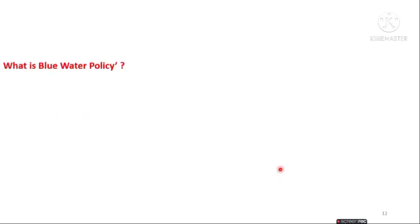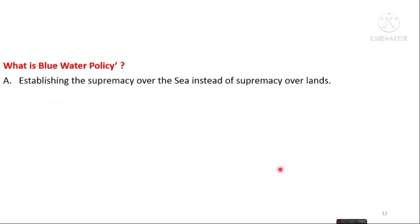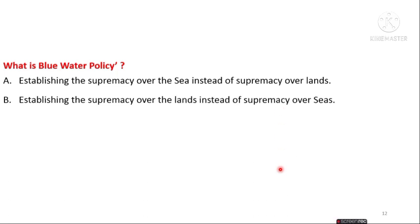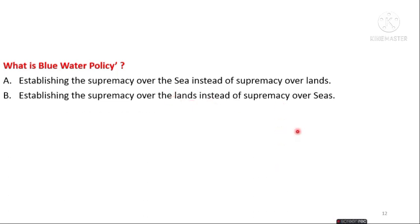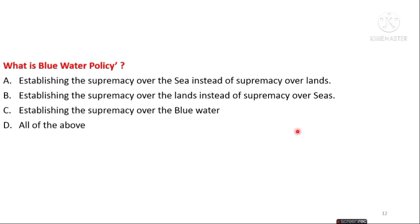The next question is: what is the Blue Water Policy? Option A is establishing supremacy over the sea instead of supremacy over the lands. Option B is establishing supremacy over the lands instead of the seas. The answer is option A — it is establishing supremacy over the sea route instead of supremacy over the land. This Blue Water Policy was implemented by the Portuguese.